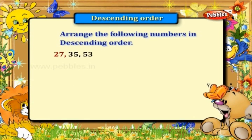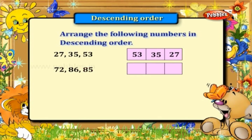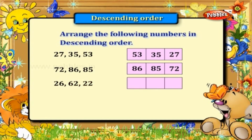Arrange these numbers in descending order. 27, 35, and 53. The descending order is 53, 35, and 27. Next: 72, 86, and 85. The order is 86, 85, and 72. Next: 26, 62, and 22. The order is 62, 26, and 22.